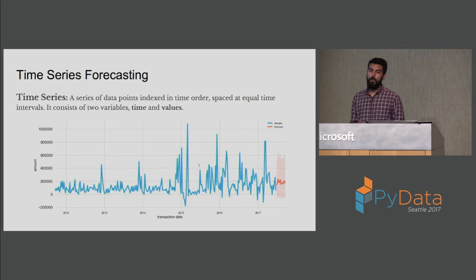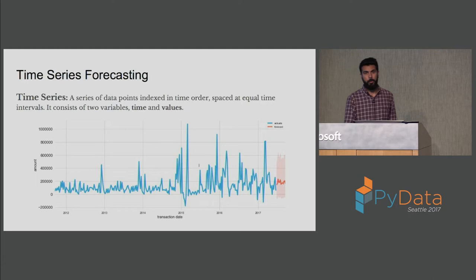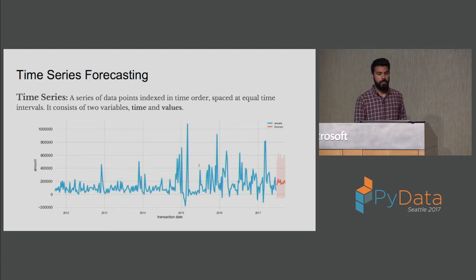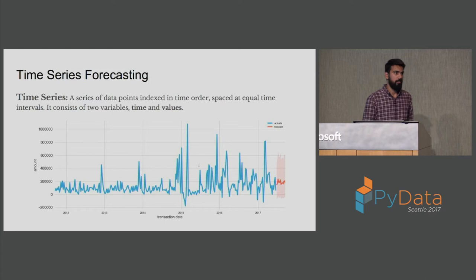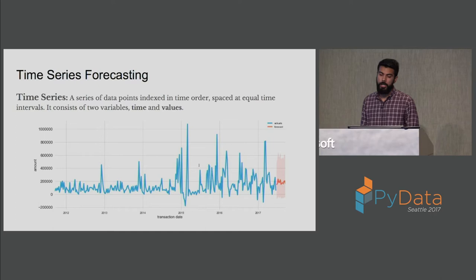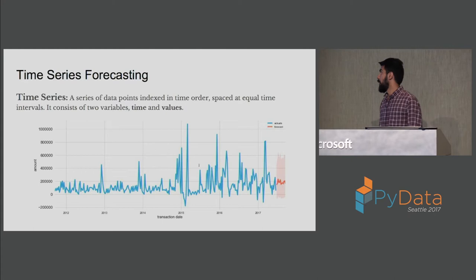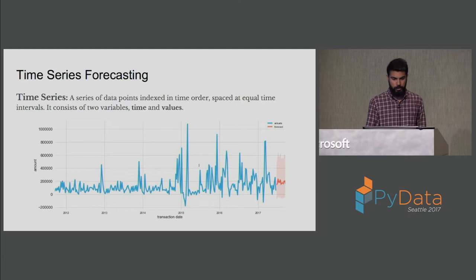Before I dive into the techniques we can implement on time series data, just to give an overview for those who don't know what time series data is: it's a series of data points indexed in chronological order with an equal time space in between. If you're dealing with daily data, we have an observation for every day. Time has time or date as the independent variable and the values as the dependent variable. I have fictitious data showing how time series actually looks — on the X axis is time, on the Y axis is amount for financial transactions. The blue represents the actual time series data, whereas red represents the forecasted value, which we get once we build the forecasting models.